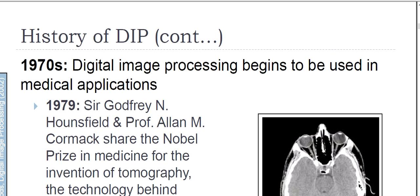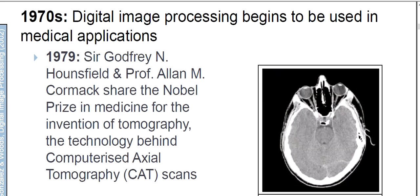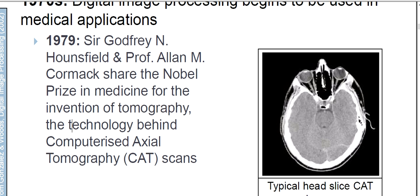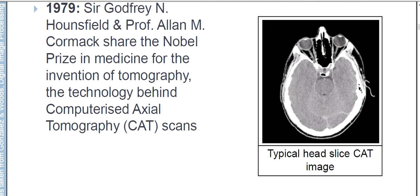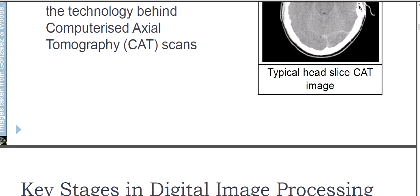In the 1970s, digital image processing began to be used in medical applications. In 1979, Charles Hounsfield and Professor Allan M. Cormack shared a Nobel Prize in medicine for the invention of tomography — the technology behind computerized axial tomography, or CAT scans. A typical CAT scan image is shown here.